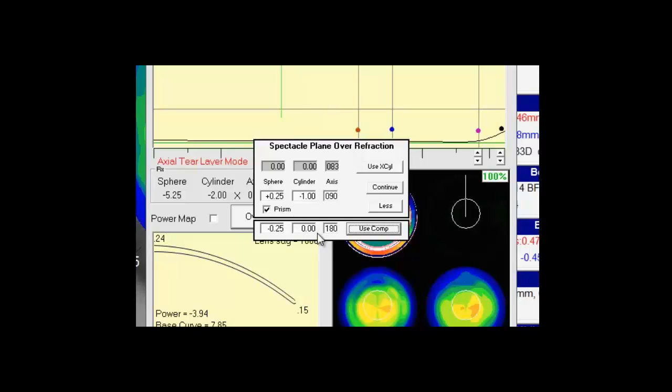It's also important to note that when we enter this over-refraction, I only clicked the use comp button once. If I click it multiple times, it will continue to add your over-refractions. So do not double click, only click that button one time, verify that the values are what you want, and then hit continue.